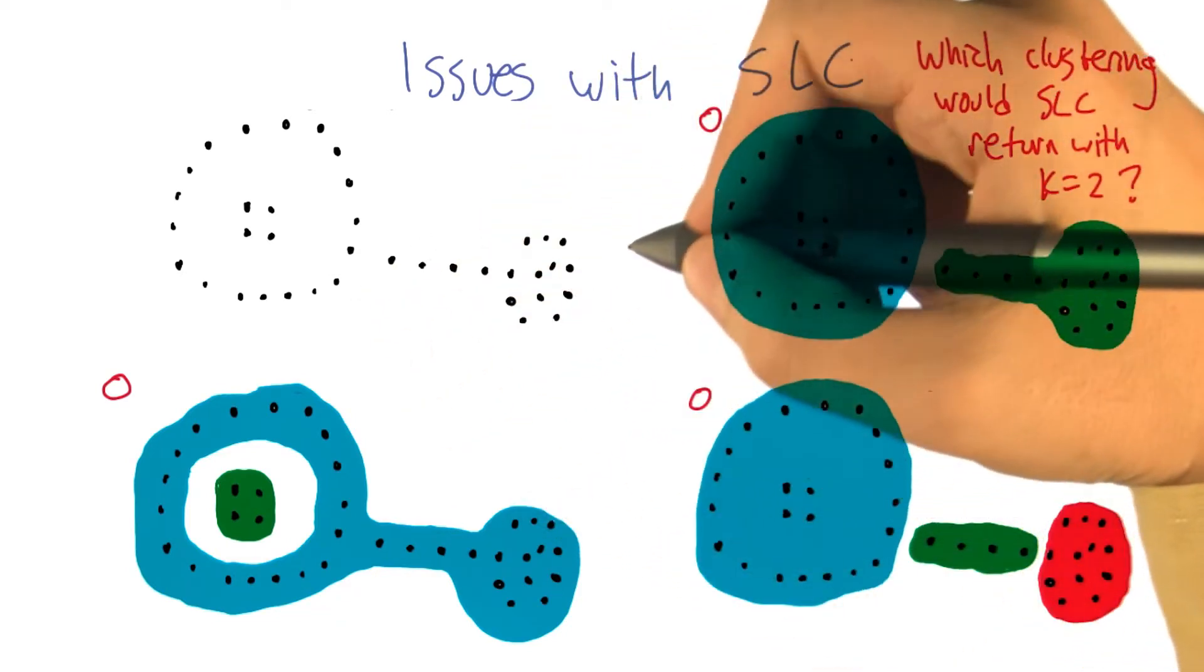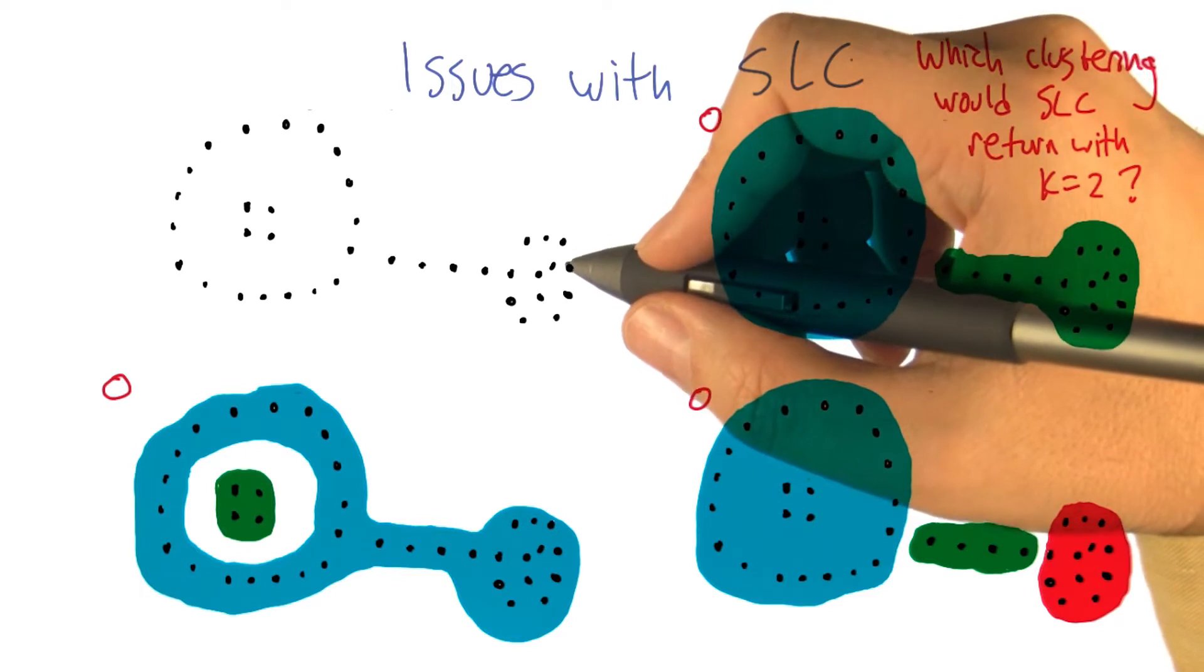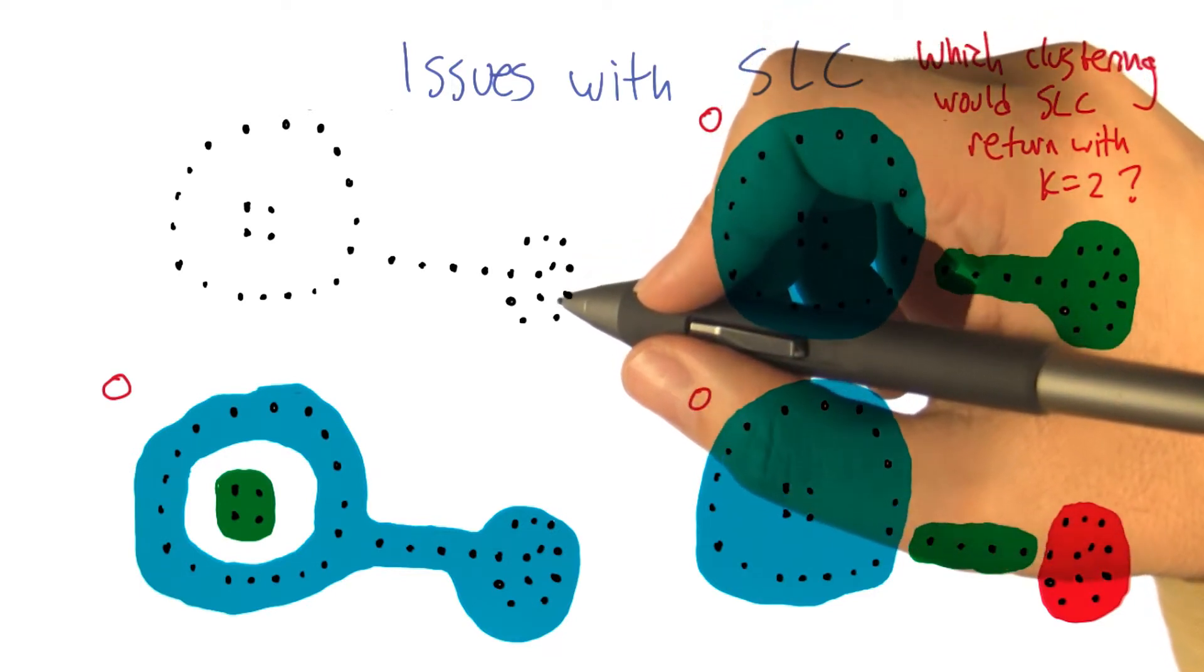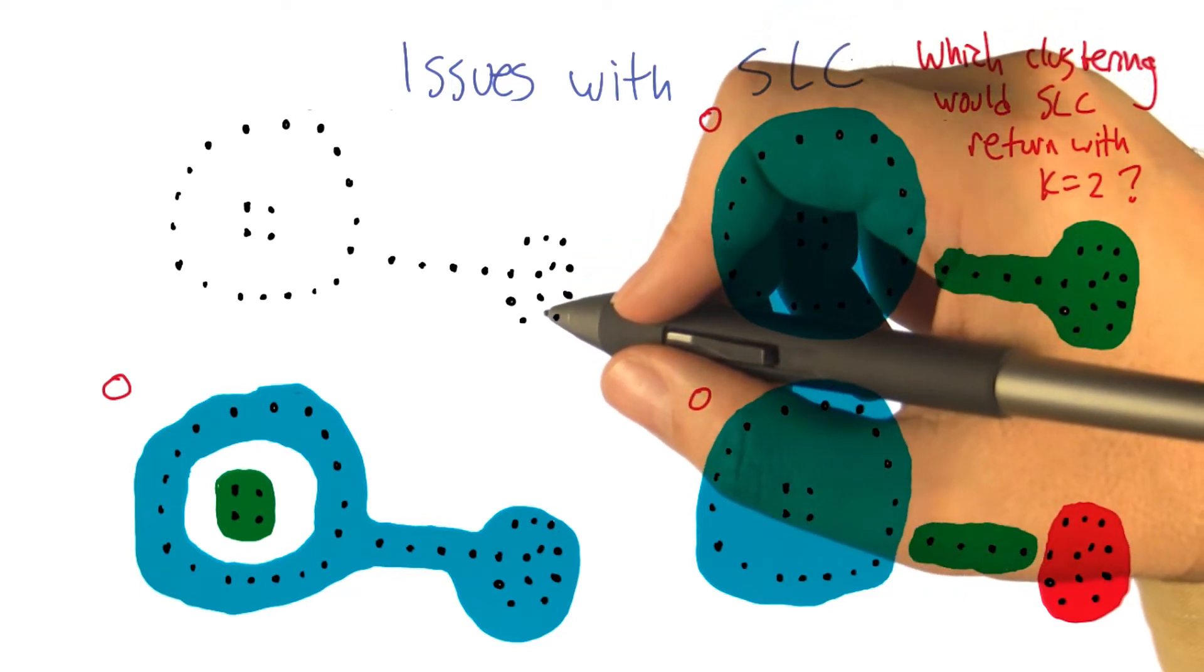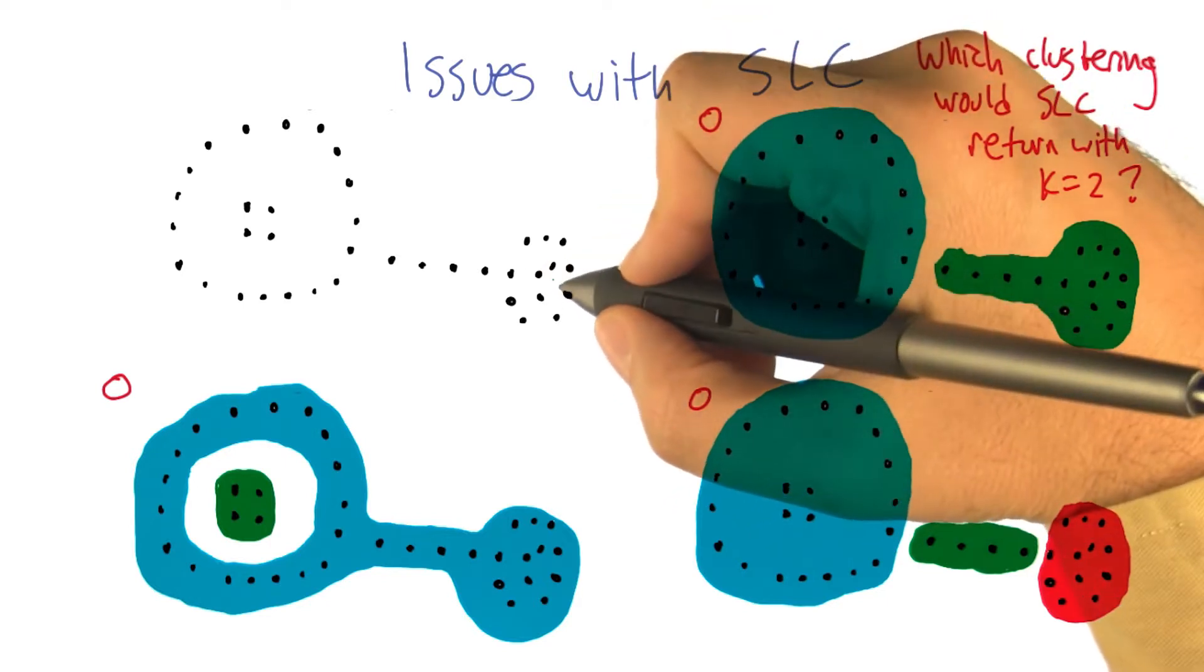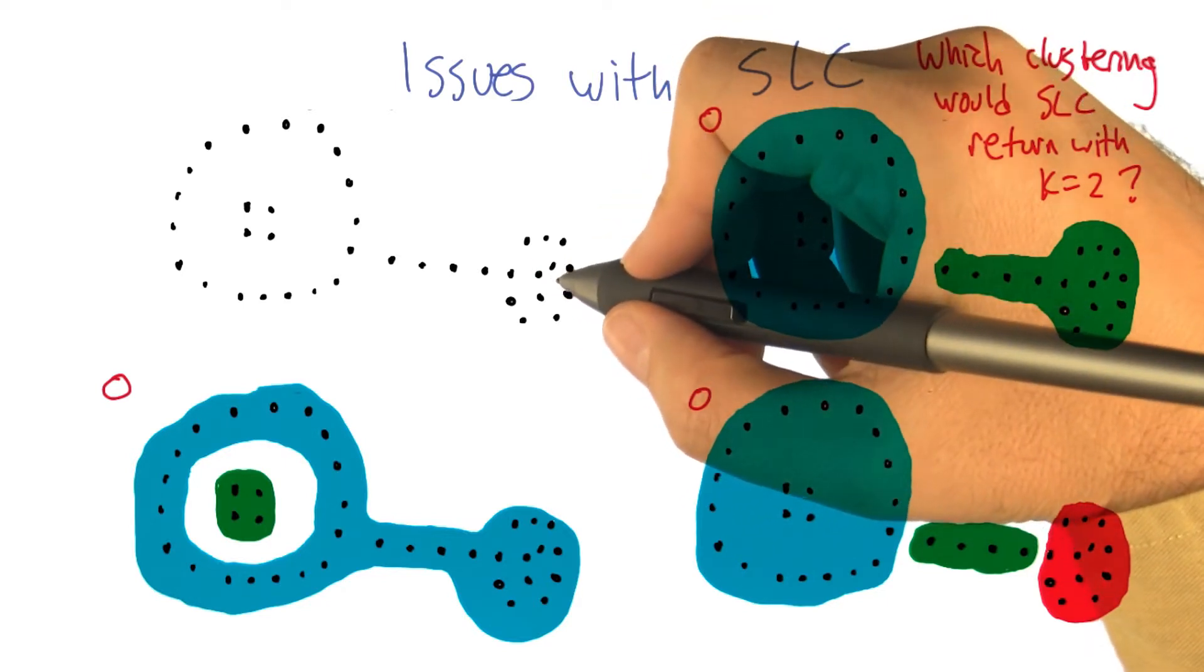Right. So, you just keep finding the clusters that are closest, and you define it as where the two closest points in two clusters are what make them, is what defines their distance.